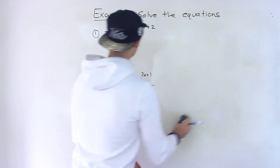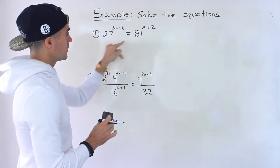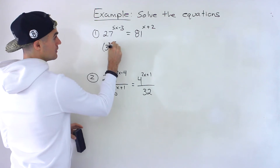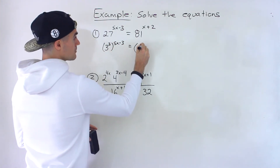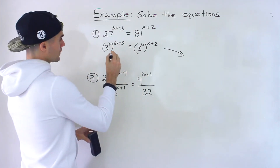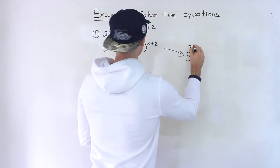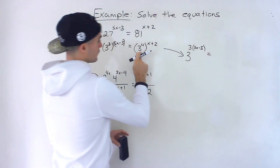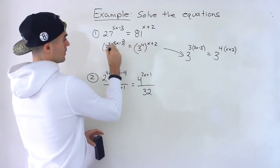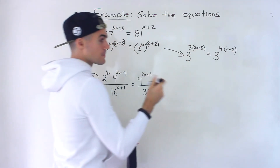Starting with number one, notice that we have 27 to the power of 5x minus 3 equals 81 to the power of x plus 2. Notice that the 27 and the 81, we can rewrite both of those in terms of a base 3. So the 27, we can rewrite as 3 to the power of 3. And then the 81, we can rewrite as 3 to the power of 4. From here, what we can do is notice that these two exponents we can multiply. So we'd end up with 3 to the power of 3 bracket 5x minus 3, and then over here 3 to the power of 4 bracket x plus 2. You have to multiply the 3 with that whole expression and the 4 by that whole expression, so make sure you put those expressions in brackets.